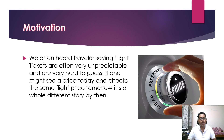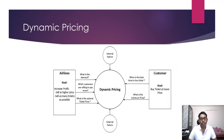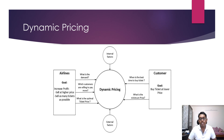The motivation of this project is that travelers often say flight tickets are very unpredictable and hard to guess. If one might see a price today and checks the same flight price tomorrow, it's a whole different story. Next, Dynamic Pricing. The airline goals are increasing profit by selling at a higher price and selling as many tickets as possible. But the customer goals are to buy tickets at a lower price — knowing the best time to buy and the minimum price of the ticket.